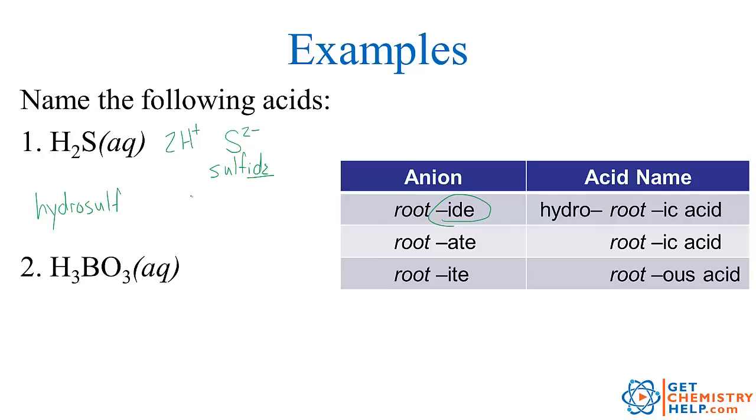the acid we put hydro on the front and ic on the end. So hydrosulf. Now the only extra thing we do with sulfur and phosphorus, instead of just saying hydrosulfic we do put the ur back in there for sulfur and call it hydrosulfuric acid. But we only do that for sulfur and for phosphorus. So hydrosulfuric. We put hydro on the front, ic acid on the end.